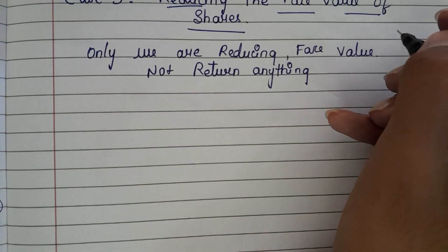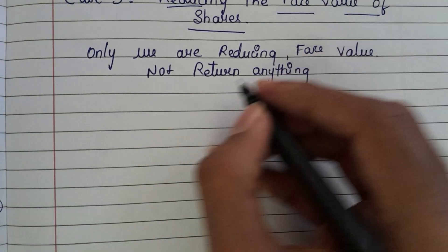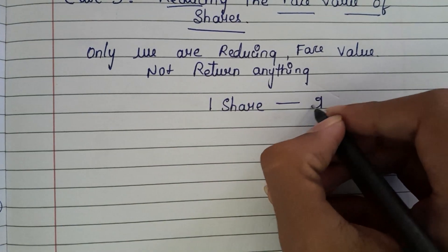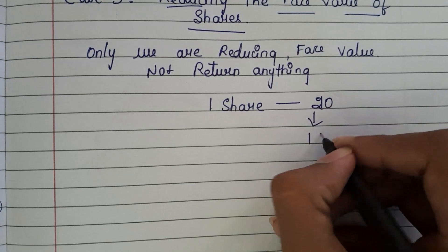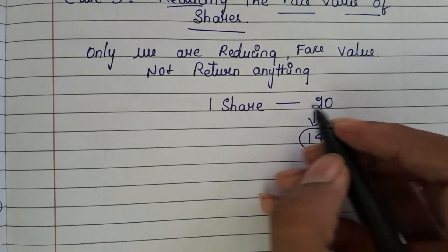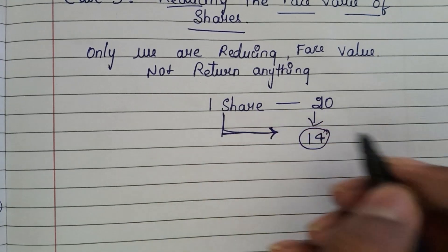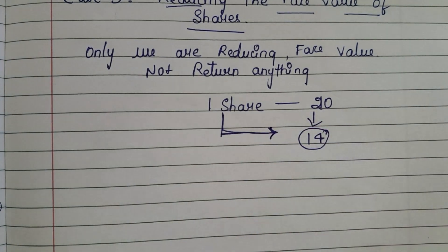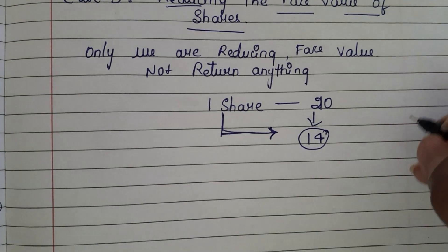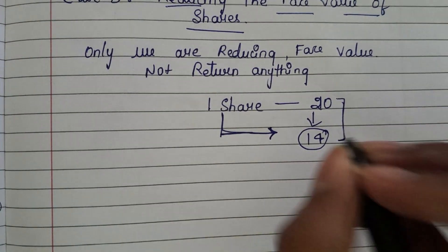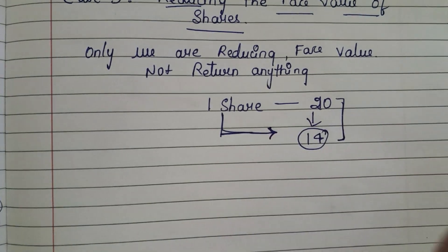For example, let's say one share value is Rs.20 and we reduce it to Rs.14, so the share value will be Rs.14 only. You may ask: is this similar to the first case? No. The first case is cancelling the uncalled liability. This is different — here we are reducing before even calling it. So don't get confused.